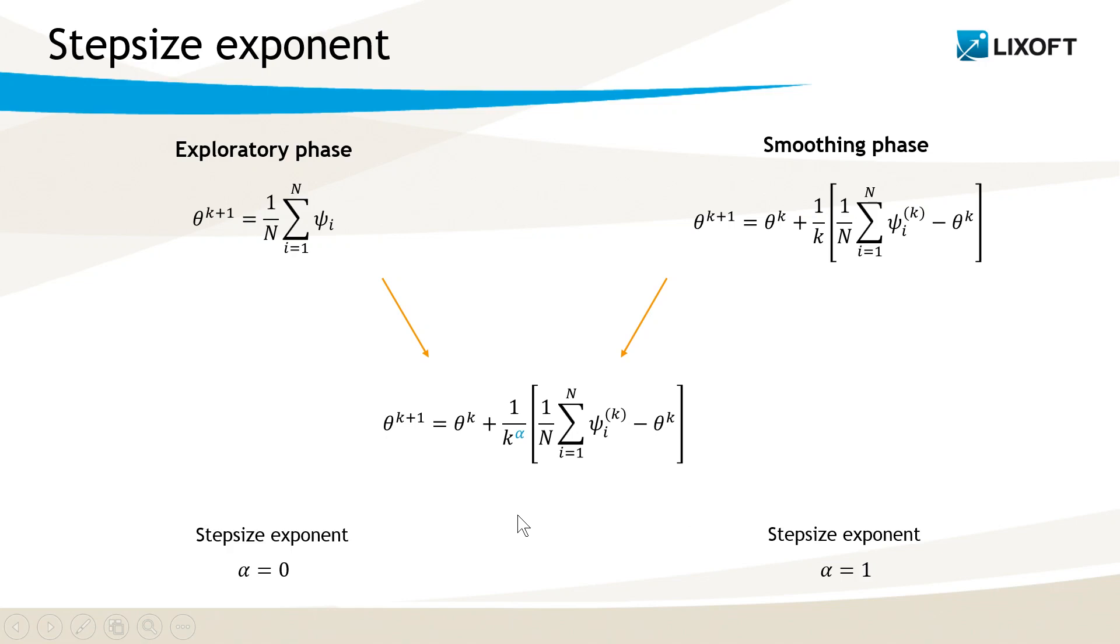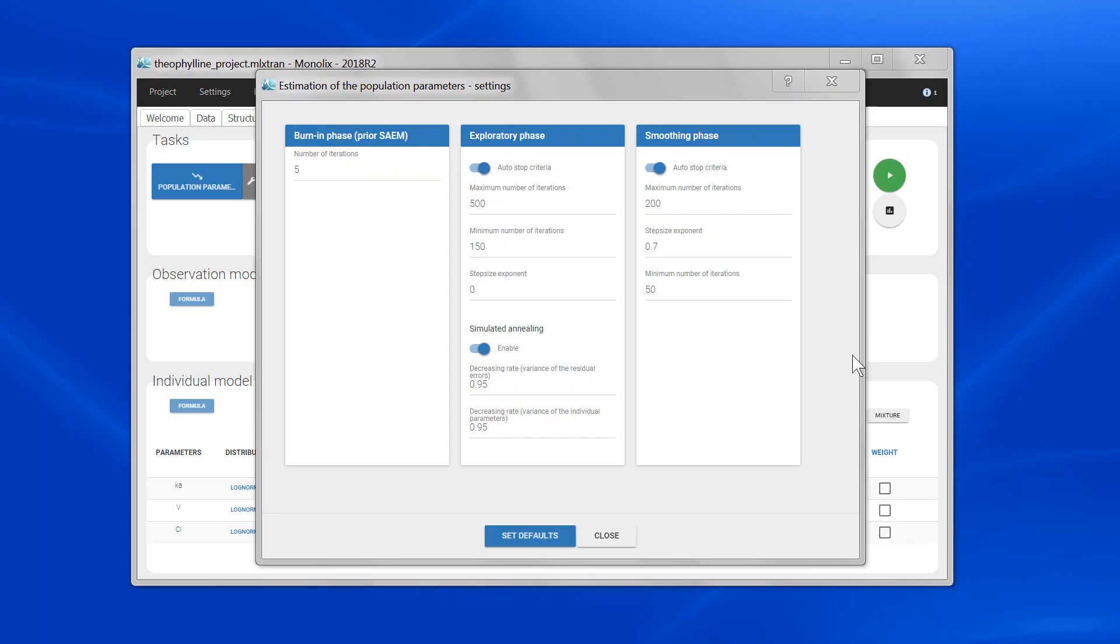It can be seen as the memory of SAEM. When it's equal to zero, I have no memory at all, and my new population parameters depend only on the individual parameters. That's important for the exploratory phase to be able to move far away from the starting point. For the smoothing phase, alpha must be between 0.5 and 1, otherwise the algorithm cannot converge. We have done a lot of tests and found that alpha equals 0.7 is the value that allows the fastest convergence, and that's the value that is set by default in Monolix.